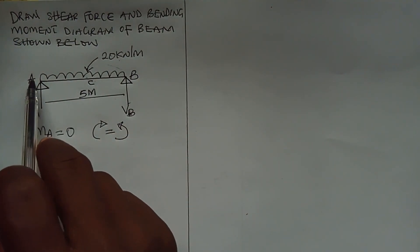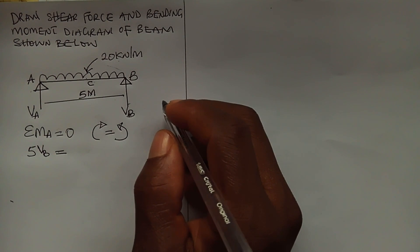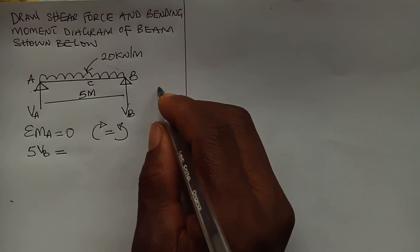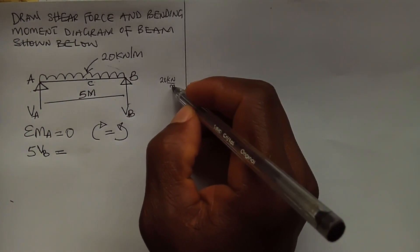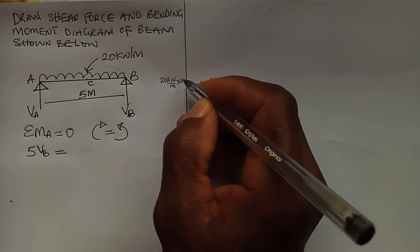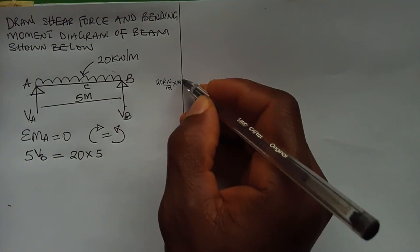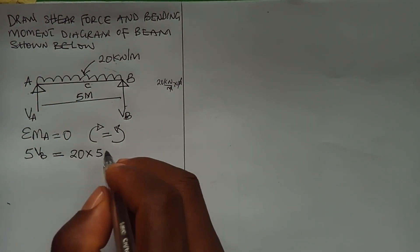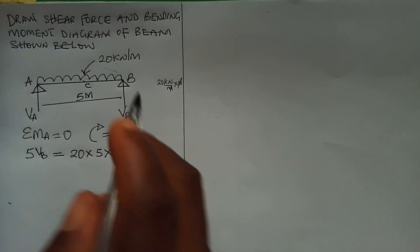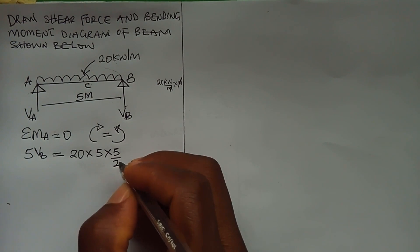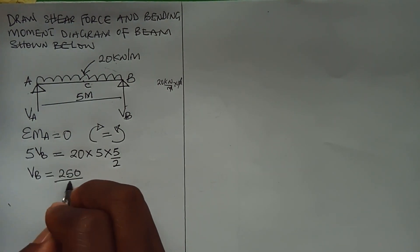Remember the UDL acts at the center of the beam, or at the center of the span where it's located. For the fact that this is 20 kilonewton per meter — remember we are talking about force — to cancel the meter unit you multiply by the meter, which is why you have 20 multiplied by 5. It will act at the center of the span, which is 5 over 2 from point A. So VB equals 250 over 5.